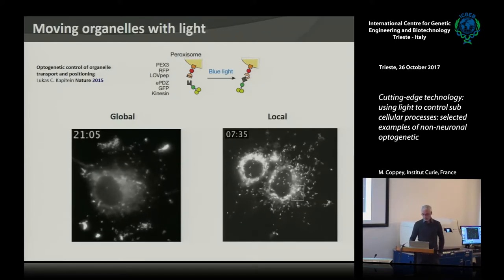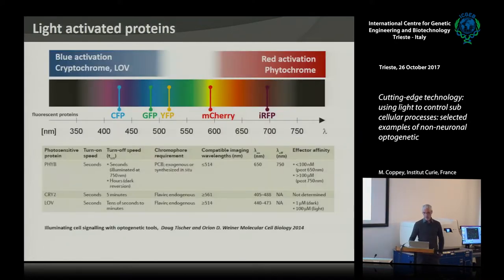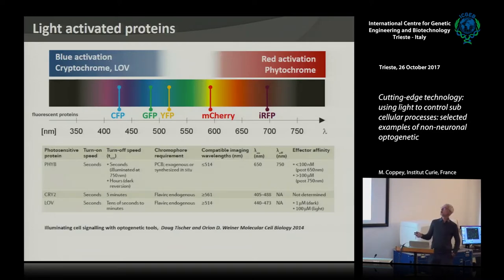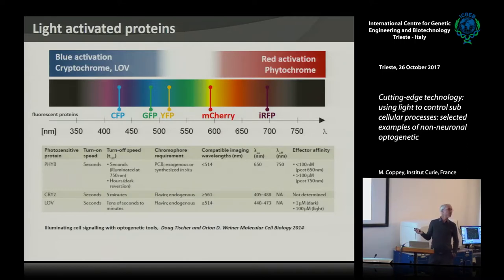For light-gated dimerization systems, there are several available. Basically two families: one blue-light activated, relying on cryptochromes or LOV domains; and one red-light activated, based on phytochromes mostly. One of the practical issues is that if you use a blue-light system to activate, you cannot use CFP, GFP, or YFP anymore for imaging because imaging them will trigger activation. To have reporters, you need to couple with mCherry and infrared fluorescent proteins. The opposite holds for red-light systems.